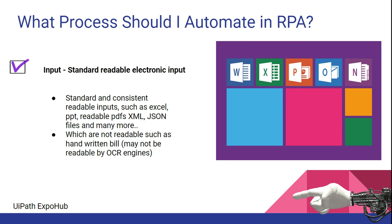Point number two is about the input. Your input could come in an email, an Excel file, or from an application, but it should be a standard, readable, electronic input. For example, a handwritten bill cannot be automated because everyone's handwriting is different and the OCR engine may not understand it. If your input is standard and readable electronically, then go for automation.